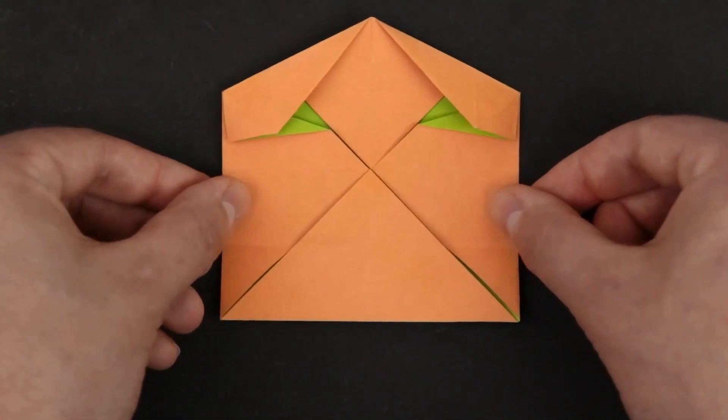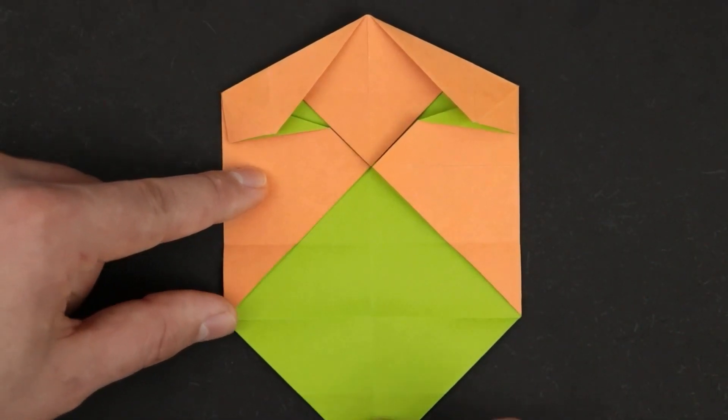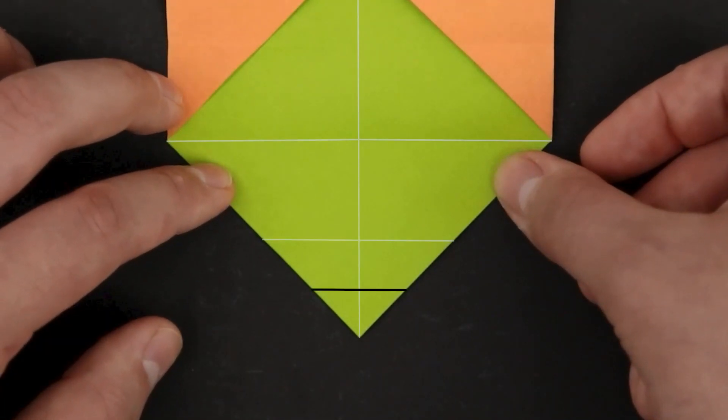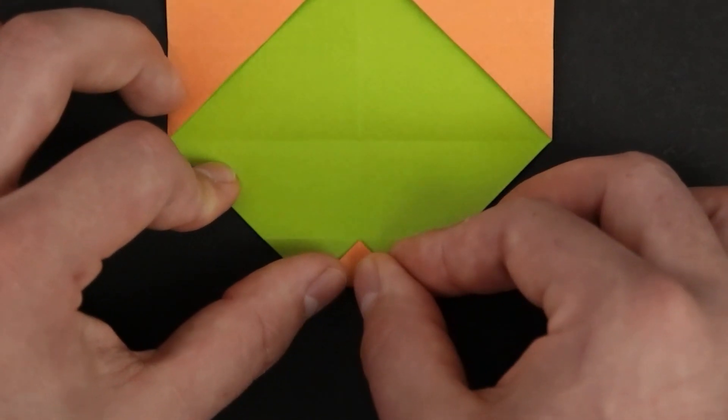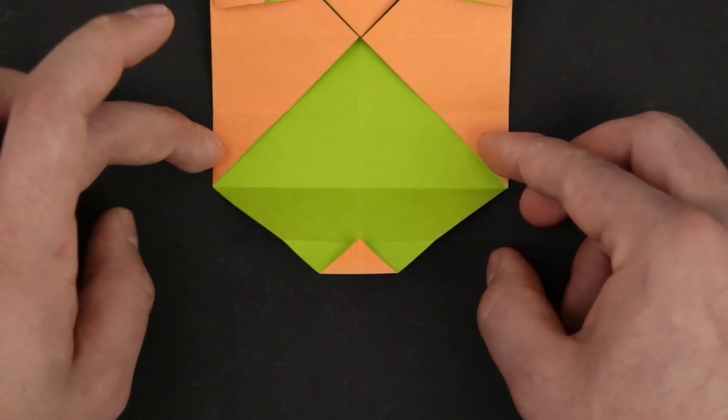Okay, now to make the nose, we need to unfold the bottom corner, now fold a small part of the corner up and close again.